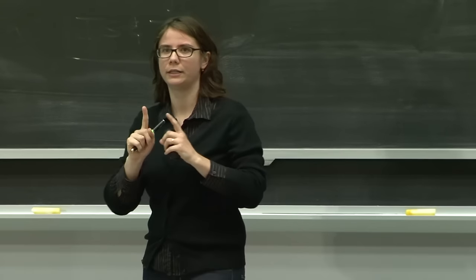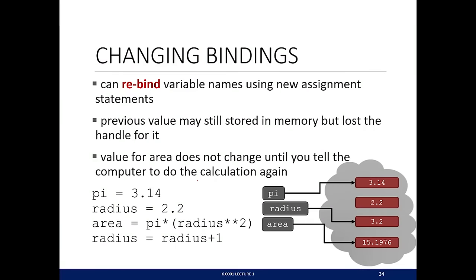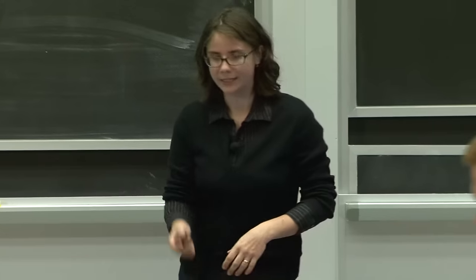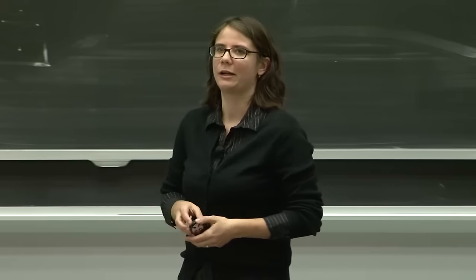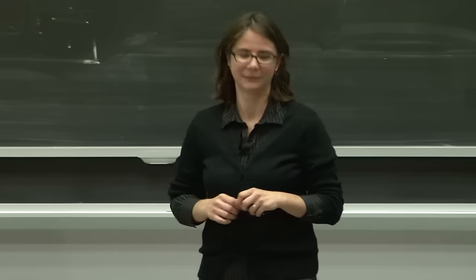The value of area did not change — and that's very important. It did not change because those are all the instructions we told the computer to do. We told it to change radius to be radius + 1, but we never told it to recalculate the area. The computer only does what we tell it to do. Next lecture, we're going to talk about adding control flow to our programs — how do you tell the computer to do one thing or another?